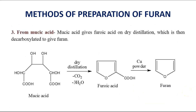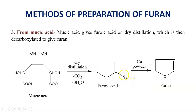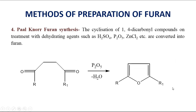The third method for preparation of furan is from mucic acid. Mucic acid on dry distillation gives furic acid. This furic acid is then decarboxylated — the CO₂ is removed — and we get the final product, furan.